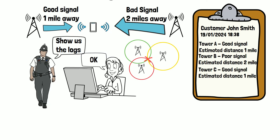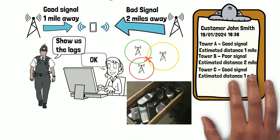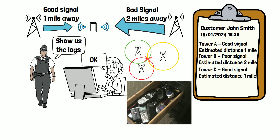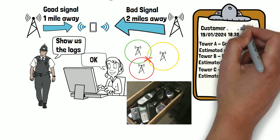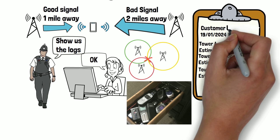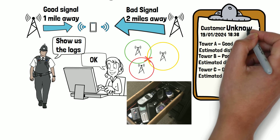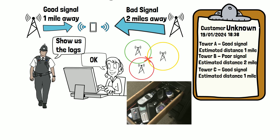It's worth noting this method of tracking only works if a cell service provider can match a phone number to a customer or suspect. This is why we often see criminals in films use a prepaid burner phone — it means the cell service provider can't match the phone number to a person, as the criminal has not provided personal information to the cell service provider like you would when you take out a regular contract.